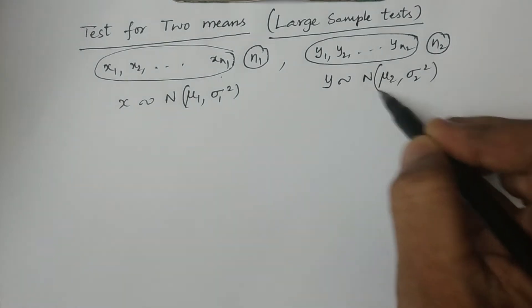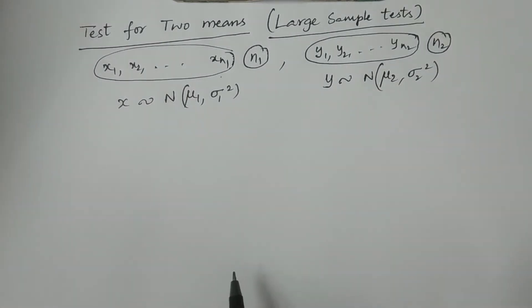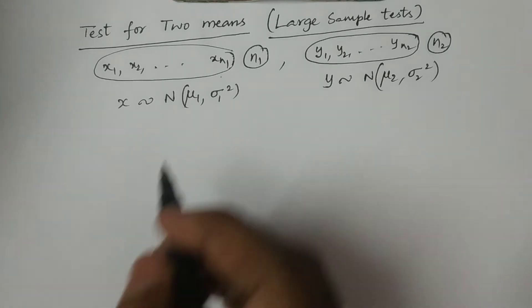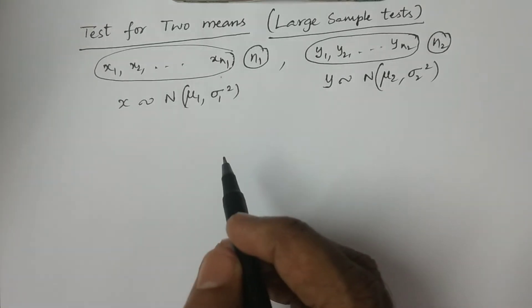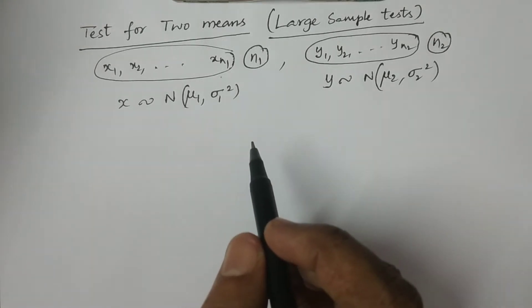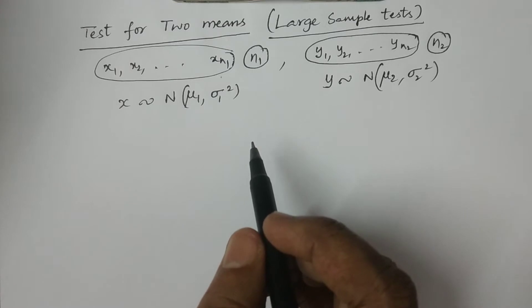All xi follow a normal distribution with mean mu1 and variance sigma1 square. Similarly, y follows a normal distribution with mean mu2 and variance sigma2 square. This is the basic distribution we are considering, since we are dealing with large sample tests.